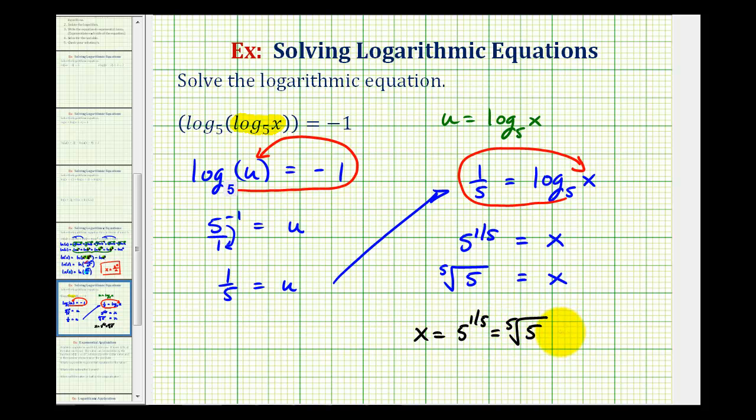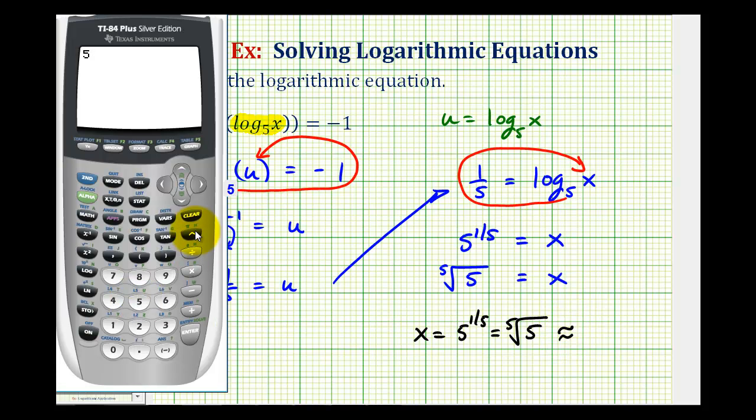Let's also get a decimal approximation. So five to the one-fifth power is the same as the fifth root of five, which is approximately, let's round this to four decimal places, 1.3797.